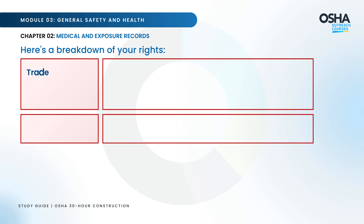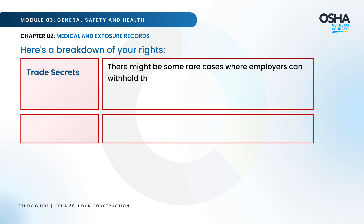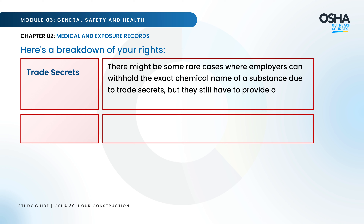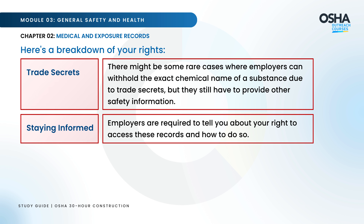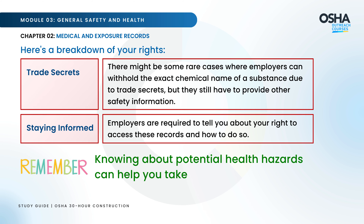Trade secrets: in rare cases, employers can withhold the exact chemical name of a substance due to trade secrets, but they still have to provide other safety information. Employers are also required to tell you about your right to access these records and how to do so. Remember, knowing about potential health hazards can help you take steps to protect yourself.